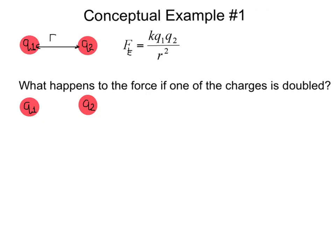Conceptual example number one. Again, let's remember that the force between Q1 and Q2 when they're separated by a distance R is given by Coulomb's Law as K Q1 times Q2 over R squared. What happens if the force on one of the charges is doubled? That is, we make Q2 to Q2.